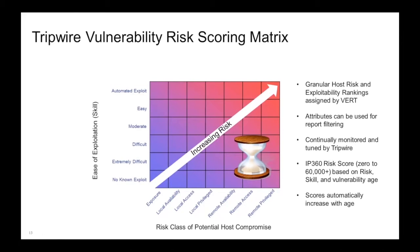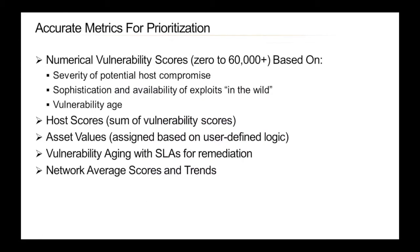A vulnerability's age is an important characteristic because older vulnerabilities are commonly the root cause of system compromises. Individual vulnerability scores are added together to produce a host score. The host score is an easy way of recognizing that a host has one or more critical vulnerabilities. For example, if a host has a score of 100, there's minimal risk. On the other hand, a host with a score of 100,000 has at least one critical vulnerability, at which point you can drill down and quickly identify which vulnerabilities need to be immediately remediated.